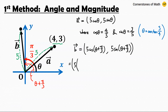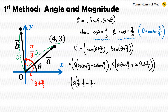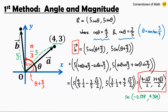Using the angle addition formulas, this equals 5 times (cosine theta cosine(pi/3) minus sine theta sine(pi/3)), and 5 times (sine theta cosine(pi/3) plus cosine theta sine(pi/3)). Since cosine theta equals 4/5 and sine theta equals 3/5, we have 5 times (4/5 times 1/2 minus 3/5 times √3/2), and 5 times (3/5 times 1/2 plus 4/5 times √3/2), which gives (4 − 3√3)/2 , (3 + 4√3)/2. And here we have our answer.